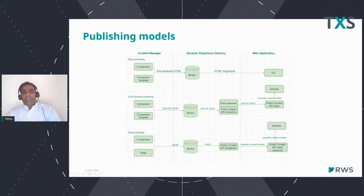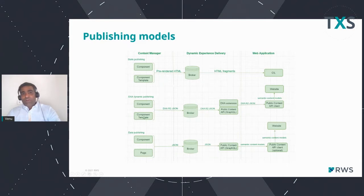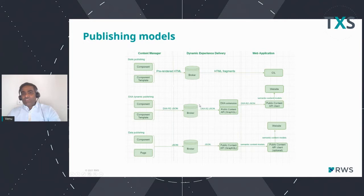At a later stage, we saw the DXA dynamic publishing, where you can publish again with a component and component template. But this time you are not pre-rendering your HTML output while publishing — you just publish them as JSON format. Those JSON outputs will be stored in the broker database. You use the DX extension or the PCA — Public Content API — to pull that content into your website. On the web application side, you use a Public Content API like GraphQL or any other technology to pull the content and render it onto your website directly.